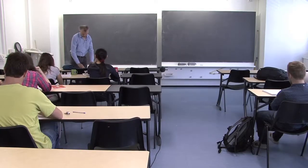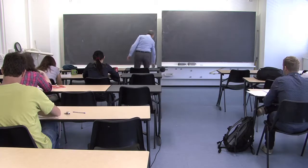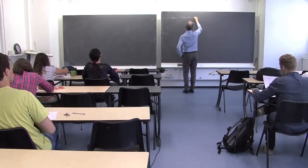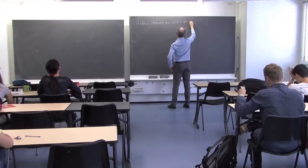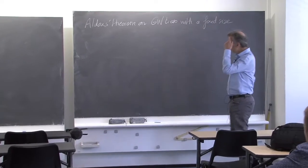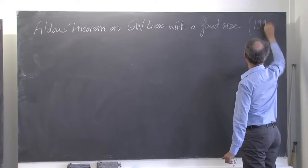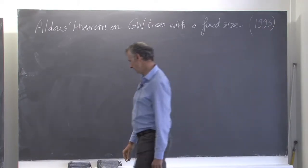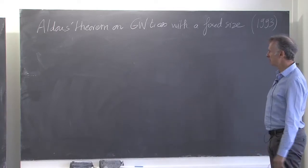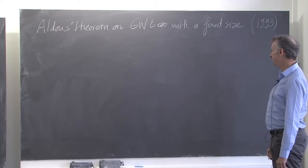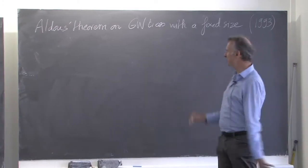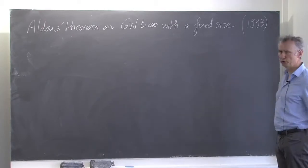Today I will speak about Aldous's theorem. This is a theorem about Galton-Watson trees with a fixed size. It goes back to 1993, and it was a rather important result in the development of the theory on random trees. In a sense it's not so different from what we saw in the second lecture, but the proof is a bit more delicate, so I will not give a complete proof but will explain the main ideas.